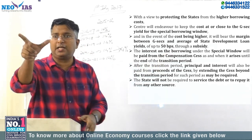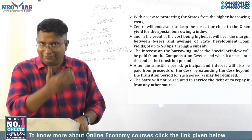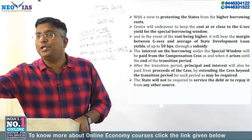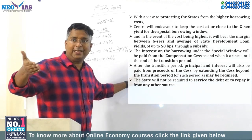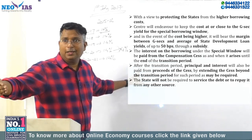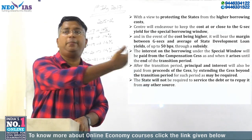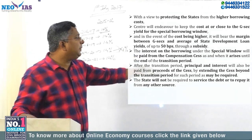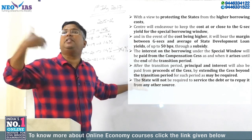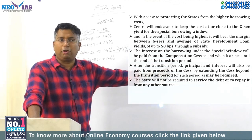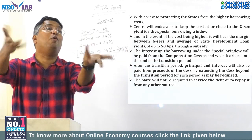The interest will be paid from the compensation cess until the end of the transition period — which is 5 years starting from 1st July 2017, so until end of June 2022. After the transition period, the principal and interest will also be paid from the proceeds of the cess. This means the GST Compensation Cess will be continued after the 5-year period by extending it. The Economic Survey says the GST Compensation Cess will be extended beyond the transition period as may be required — they are not saying exactly how long, just as required to compensate states and pay the interest and principal.